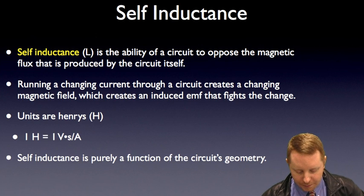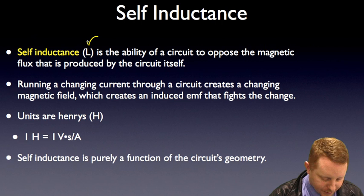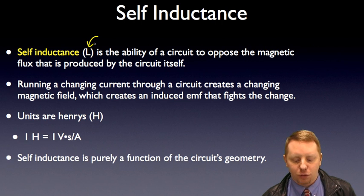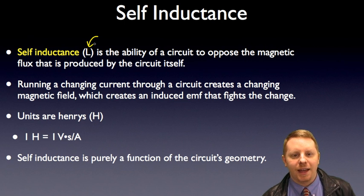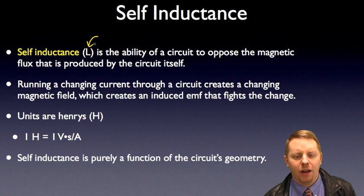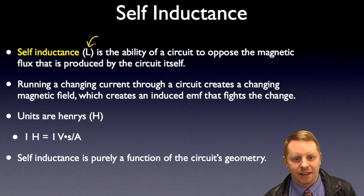Let's start by talking about what inductance is. Self-inductance, given the symbol capital L, is the ability of a circuit to oppose the magnetic flux produced by the circuit itself. If we have current flowing in a circuit, we're going to be creating a magnetic field. Any changes in that current are going to create changes in the magnetic field, and if we have changes in the magnetic field, we're going to have an induced EMF that's going to create a current that wants to fight that changing magnetic flux.